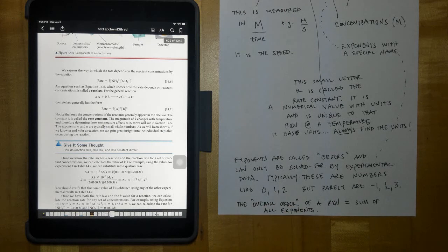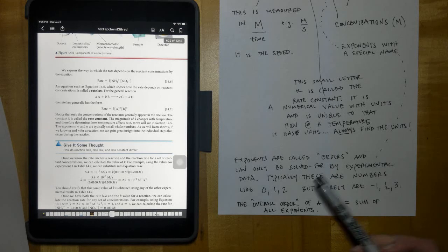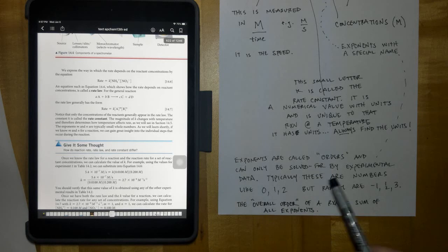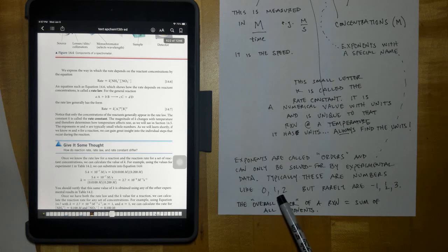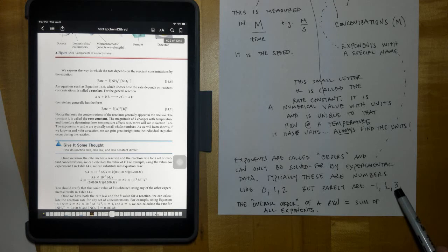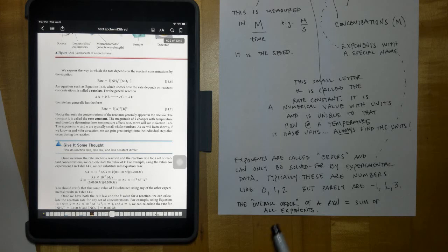The exponents are called orders. That's the fancy name for the exponent. When they say it's to the first order, second order, third order, that means it's raised to that power, and they can only be solved for experimentally via the data from an experiment. Typically, these numbers are 0, 1, and 2. Typically, most experiments end up being 0, 1, or 2 for the exponents, but rarely they're things like negative 1, 1 half, 3. They could be other strange things as well, but you don't see those nearly as often.